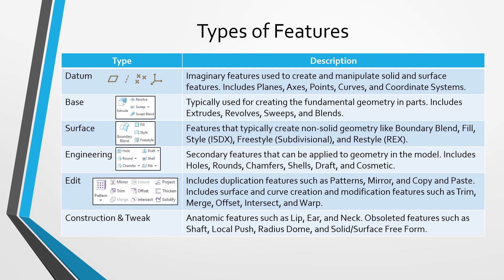There is another group of features called construction features and tweak features. Most of these do not appear in the interface by default and you usually have to add them. These are older features from the Pro/ENGINEER days from almost 30 years ago, and they're not used that much and have a bit of a clunky interface. Those include anatomic features with names like lip, ear, and neck, as well as obsoleted features that need to be enabled via a config.pro option — things like shaft, local push, and radius dome.